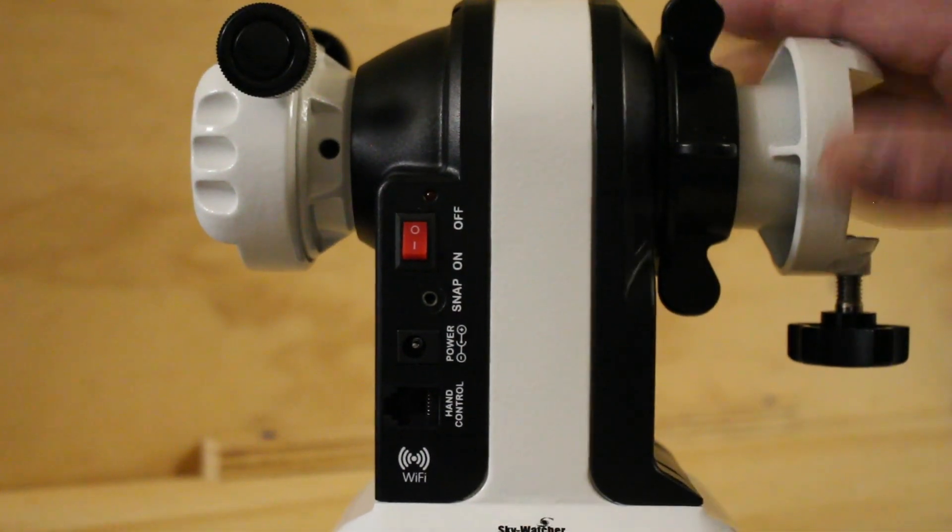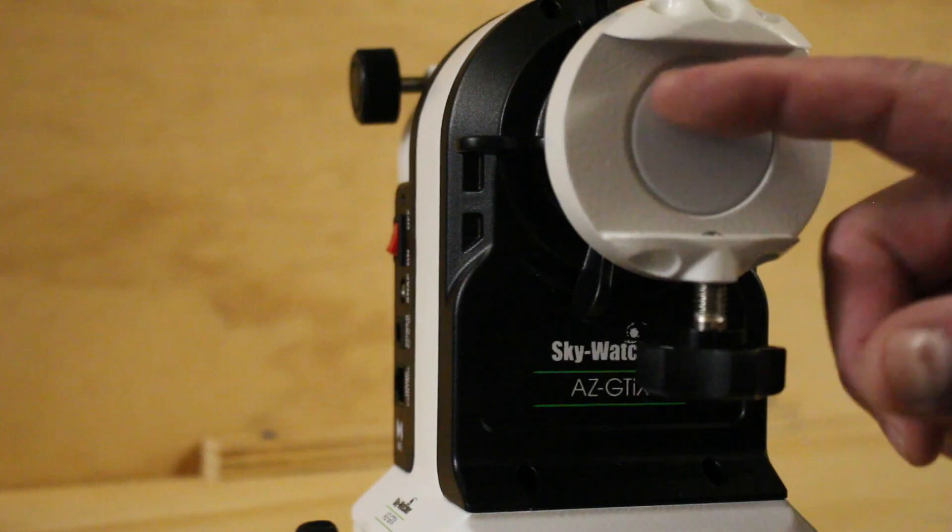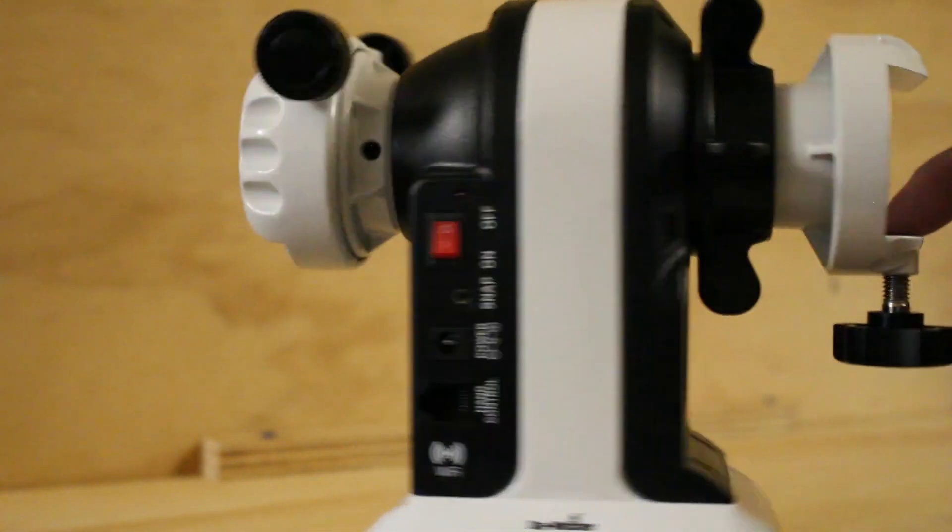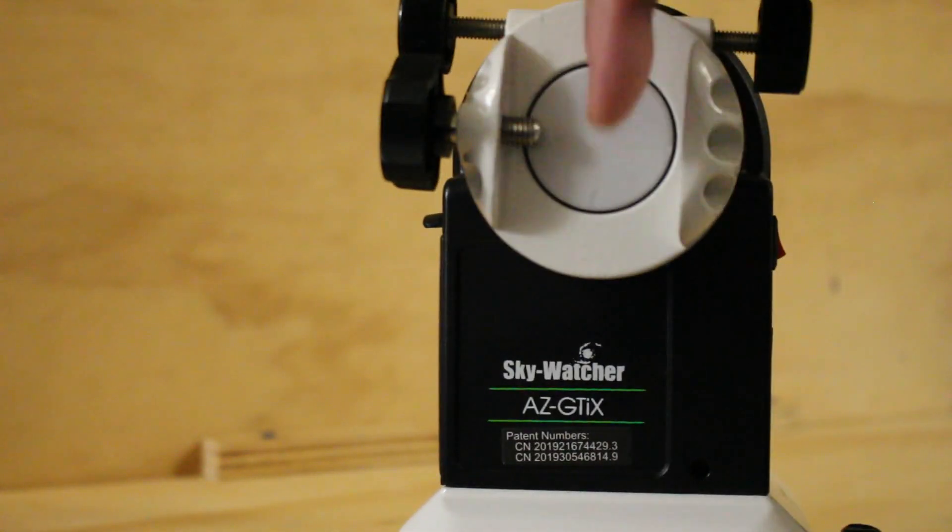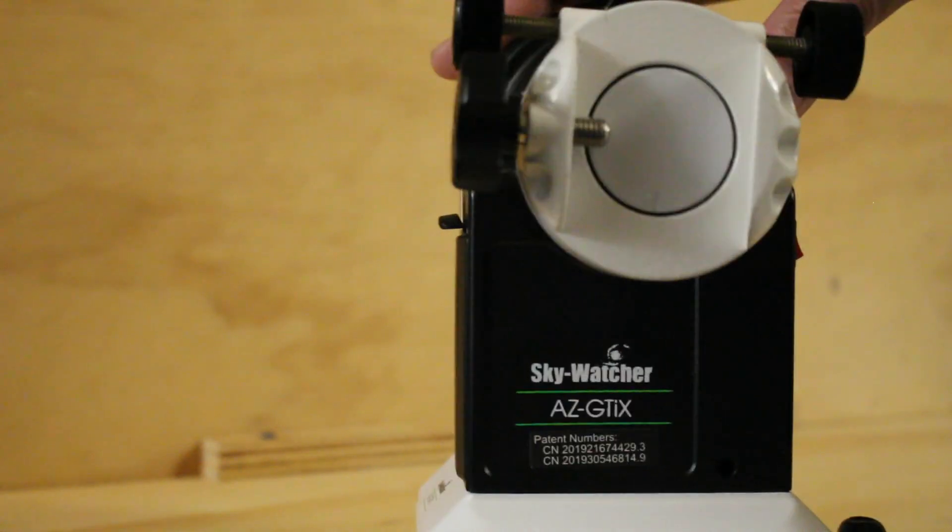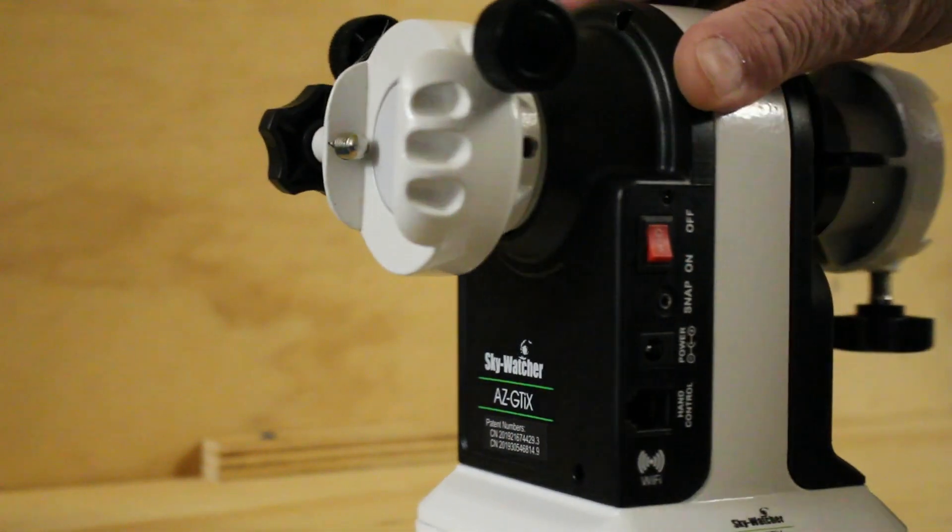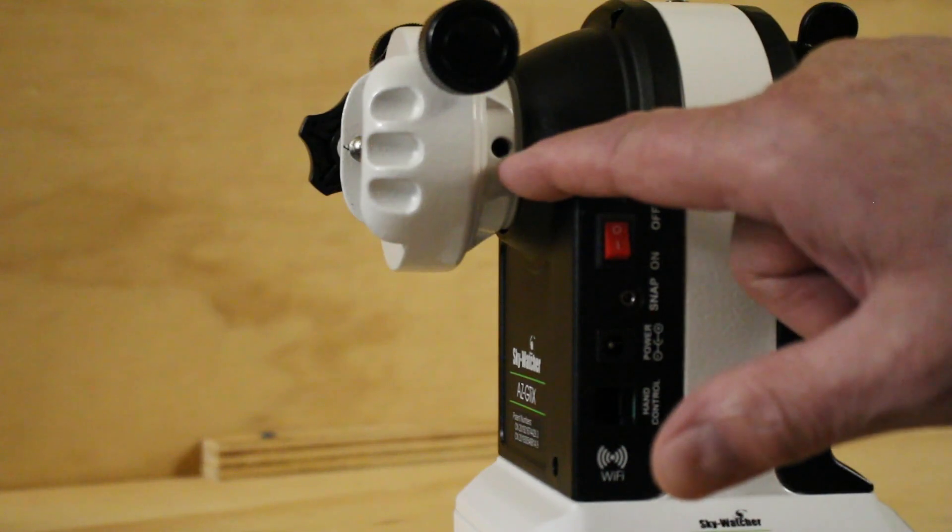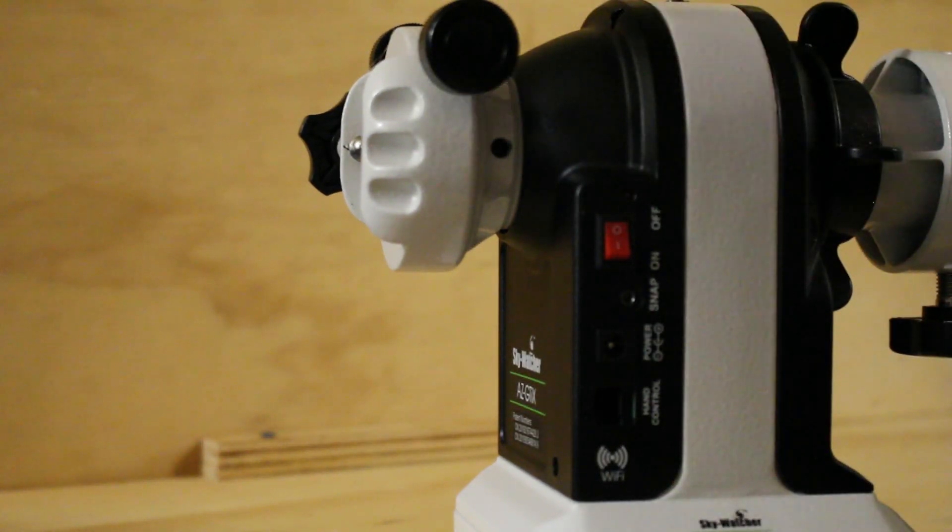So what we got is dual saddles. For some reason they ship it with one horizontal and one vertical, but that's easy enough to change. It's got three set screws on the one side and you can just loosen them up and turn it to wherever you want it.